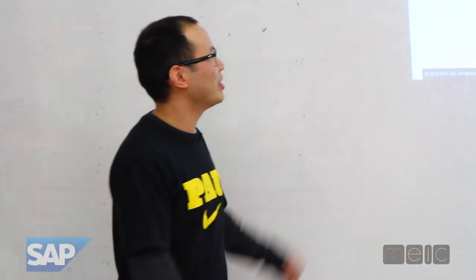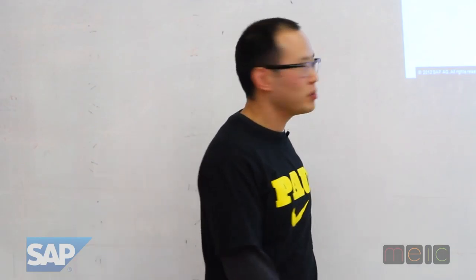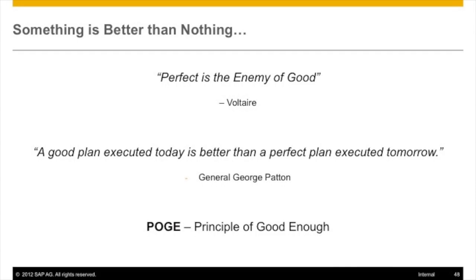Since I love quotes, here are a couple more. 'Perfection is the enemy of good' — Voltaire. 'A good plan executed today is better than a perfect plan executed tomorrow' — that's why we're talking about tweaks. Is the good plan executed today better than the perfect one tomorrow? Lastly, we're seeing this more in the market: POGE — the Principle of Good Enough. A lot of times we're crippled trying to make the perfect thing. Good enough is something that's bubbling up in the industry right now.